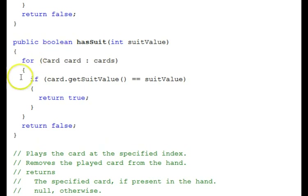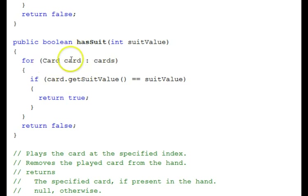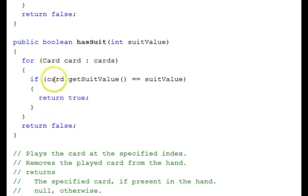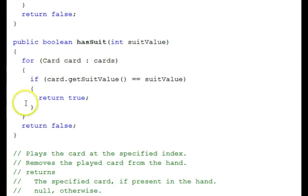In the has suit method, for example, we have an enhanced for loop that goes through the cards array list using a card variable of type card. Automatically each item in the list is iterated and all we have to do is refer to that card variable. So for example here, if card get suit value is equal to the suit value, then we know we found that suit and we return true. If we go through the whole loop and don't find anything, the next statement returns false.